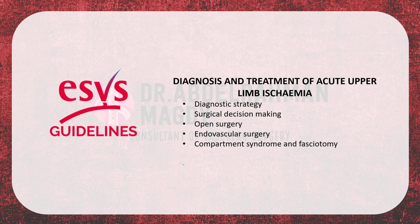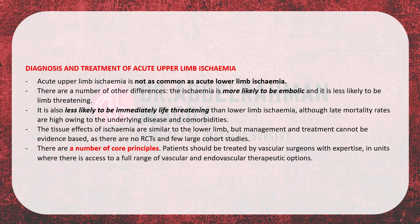Moving to our second topic — acute upper limb ischemia — we'll discuss diagnostic strategies, surgical decision-making between open and endovascular surgery, and compartment syndrome and fasciotomy of the upper limb. Acute upper limb ischemia is not as common as acute lower limb ischemia.